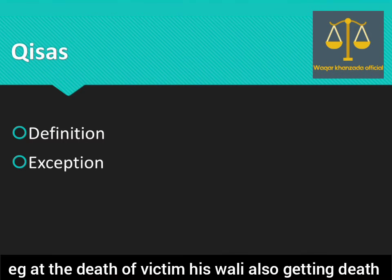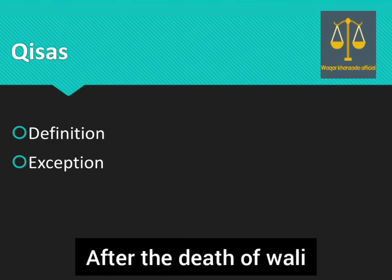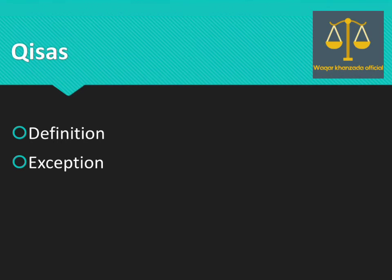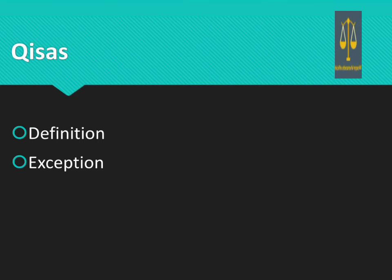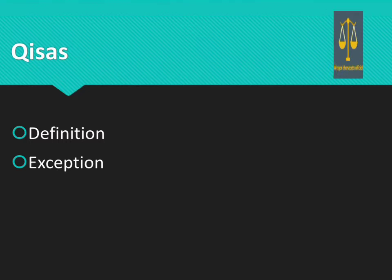مثال کے طور پر، victim کی death ہو گئی اور victim کی death کے بعد Wali — یعنی کہ جو legal heir تھا — اس کی بھی death ہو گئی۔ اور ولی کی death کے بعد اب ان دونوں کا ولی جو بنے گا، وہ offender خود بن گیا ہے۔ اس وجہ سے اب قصاص کا right impose نہیں کیا جا سکتا۔